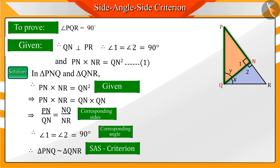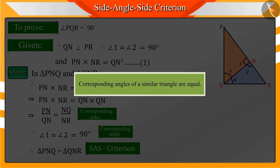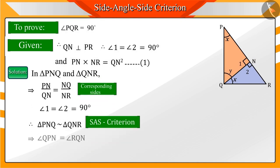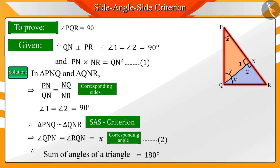Because we know that the corresponding angles of similar triangles are equal, by which we get equation 2. We know that the sum of all the angles in a triangle is equal to 180 degrees.